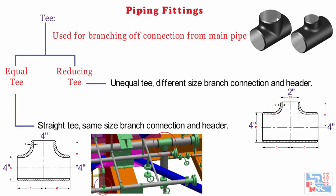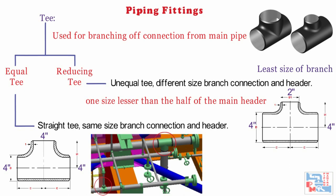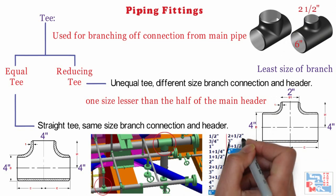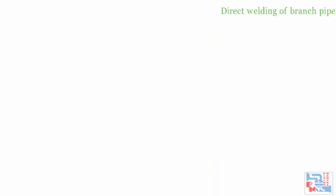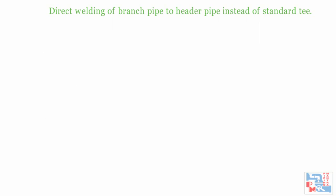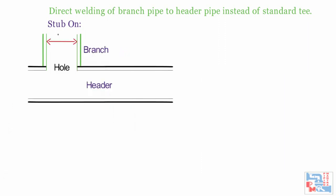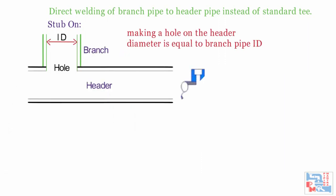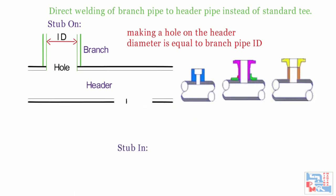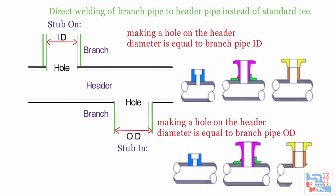Reducing Ts available in the market are one size lesser than half of the main header. For example, the least size of reducing T available for a 6-inch header is 6×2½×2, as half of 6-inch is 3-inch and one size less is 2.5-inch. For low pressure services, branching is done by direct welding of the branch pipe to the header instead of using a standard T. There are two methods: stub-out, made by cutting a hole in the header equal to the branch pipe ID and welding them together; and stub-on. The branching difference between stub-out and stub-on can be clearly seen on screen.